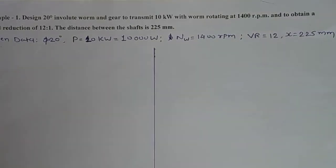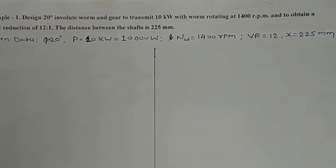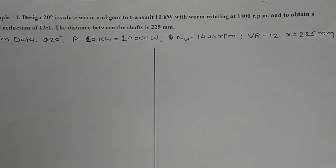We have to design the involute worm gear, finding the different dimensions of worm and worm gear — diameter, length, outer diameter, and number of teeth.